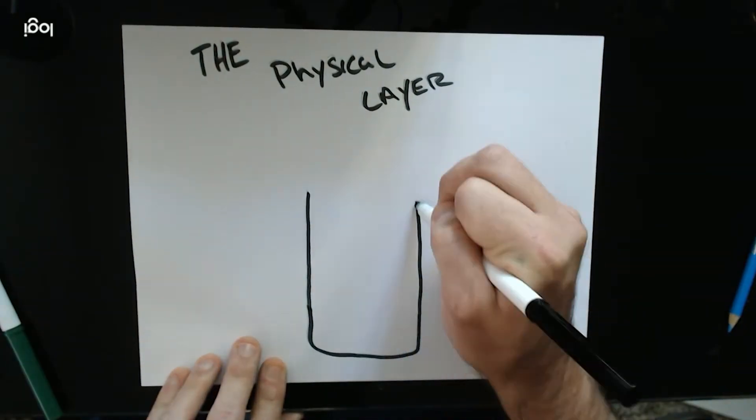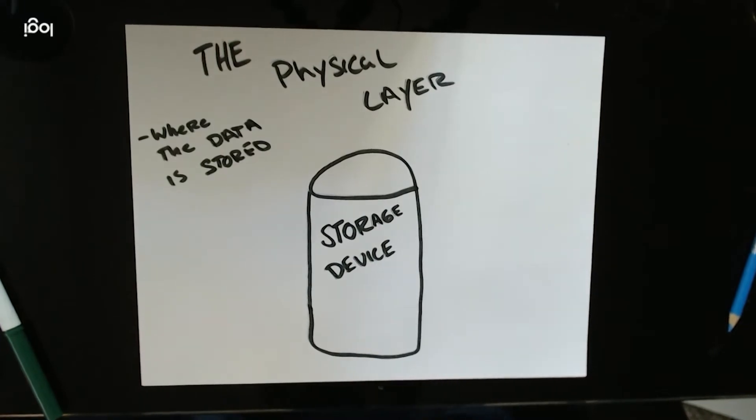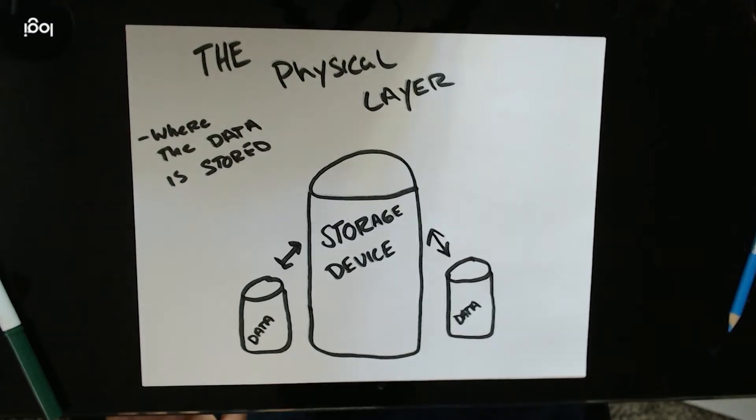The first layer of data abstraction comes from the physical layer of the database model, consisting of the physical device or multiple storage devices used to store data. A database management system allows for the modification of files or relocating of files to another drive, regardless of format.